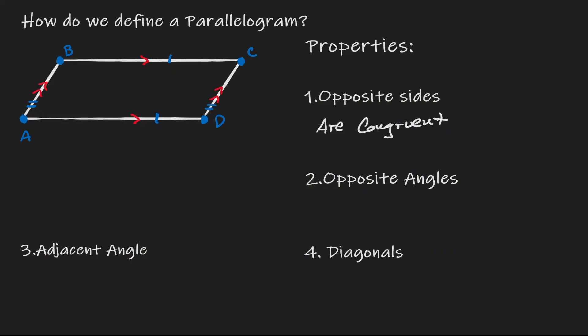Opposite angles are also congruent. If that's the case, then angle B is congruent to angle D, and angle A is congruent to angle C.